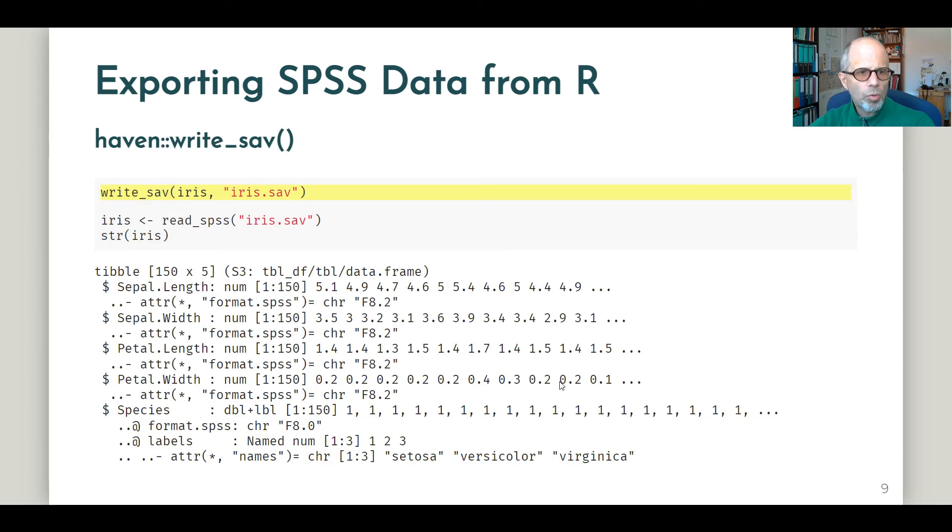How to export SPSS data from R? We can use the write underscore SAV function. It's pretty straightforward. We mention the R object, the data set, and then the file name. In this case, I'm just storing the iris data and then reading it back in. You see that in this case, the attributes are created and read in again correctly. So that's very nice.